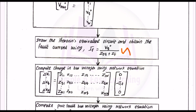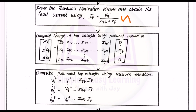Here q represents the bus at which the fault occurs, and Zf is the fault impedance. The next step is to compute the change in bus voltages using the network equation: ΔV1, ΔV2, up to ΔVn equals the Z matrix multiplied by the fault current vector, which has minus If at the fault point and zeros elsewhere. Using this, we compute the change in bus voltages.